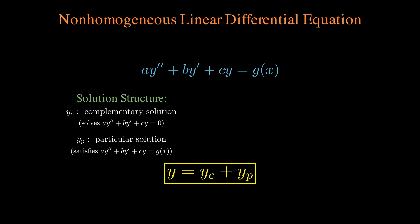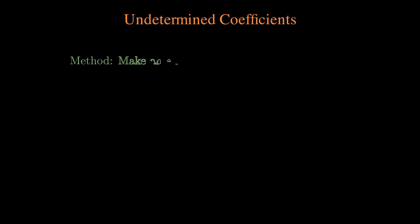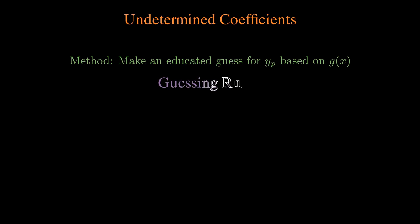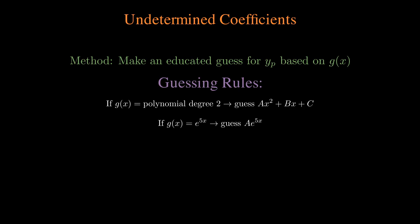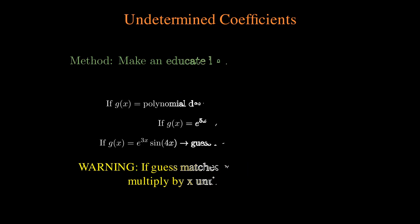There are two main ways to solve for this particular solution: the method of undetermined coefficients, or Laplace transforms. The method of undetermined coefficients is essentially guessing the form of the particular solution such that it matches the right-hand side. If the right-hand side is a polynomial of degree 2, you guess a polynomial of degree 2. If it's an exponential, you guess an exponential. If it has sines or cosines, you guess sines and cosines, because derivatives can switch between them. If your guess matches the complementary solution, go up by a factor of x.